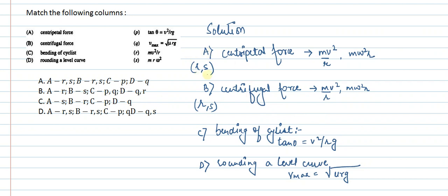So what we have is: A is matched with R,S; B is matched with R,S; C is matched with P; and D is matched with Q.